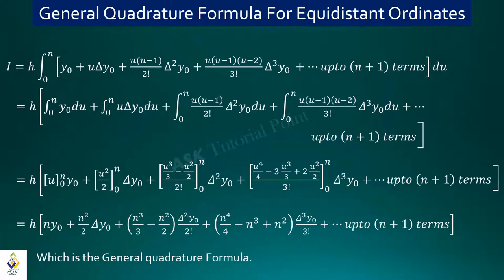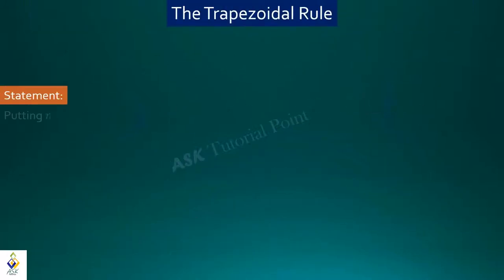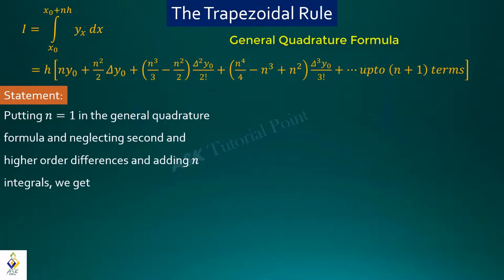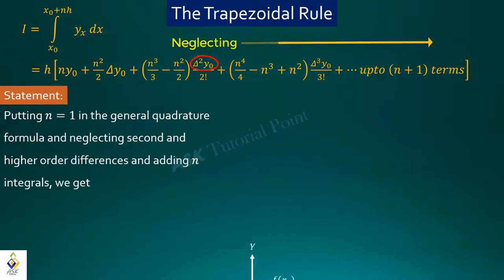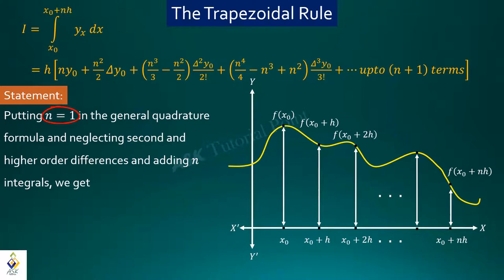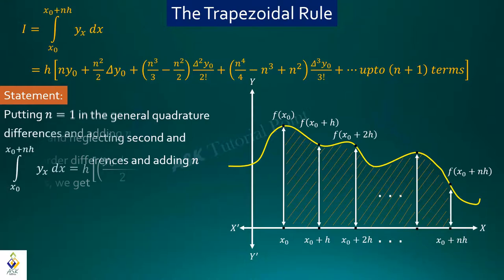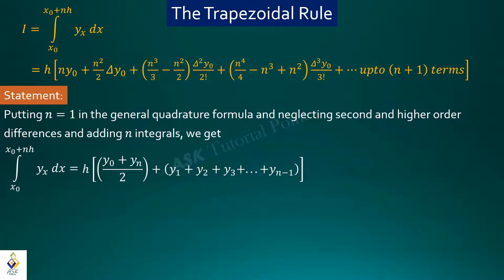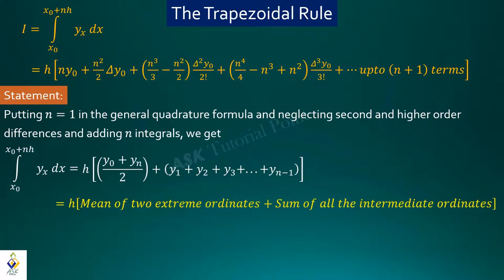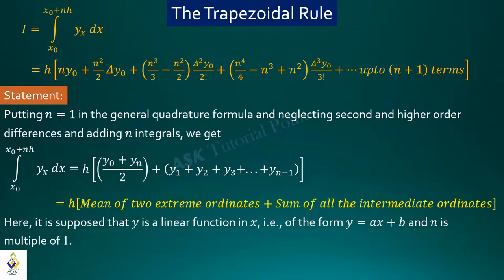Based on this general quadrature formula, we derive the trapezoidal rule, Simpson's 1/3 rule, and Simpson's 3/8 rule. For the trapezoidal rule, we put n = 1 in the general quadrature formula and ignore second and higher order differences. The trapezoidal rule formula is: h times the average of the two extreme ordinates (y₀ and yₙ), plus the sum of all the intermediate ordinates. Here we assume that the function is linear in x, i.e., of the form y = ax + b, and n is a multiple of 1.